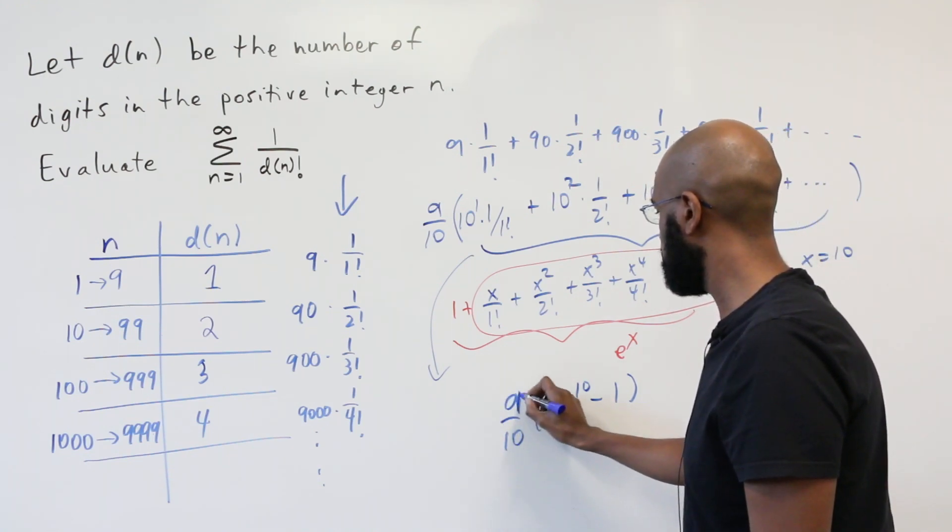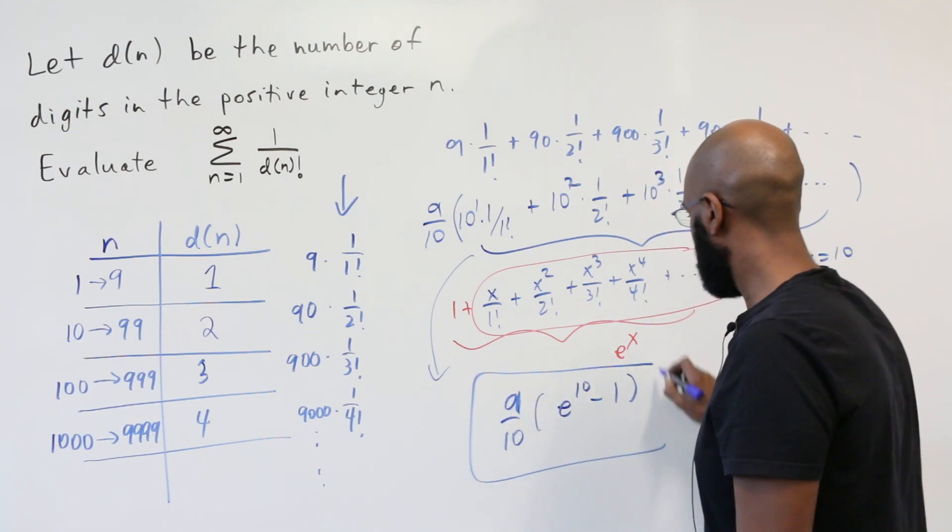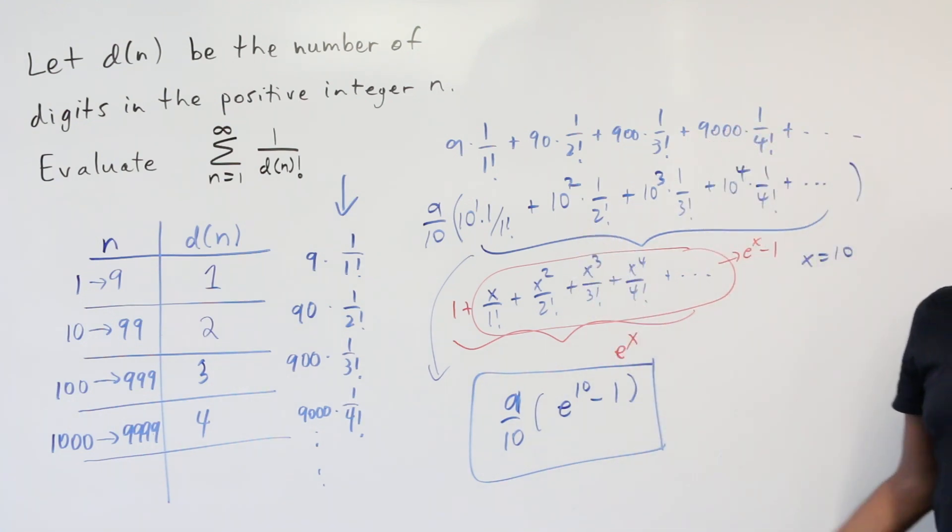And then together with this 9 tenths, this gives us that the sum we're interested in is 9 over 10 times e to the 10th minus 1.